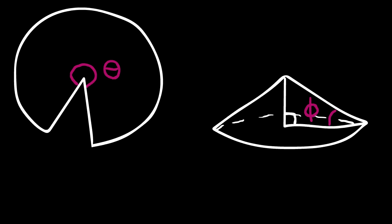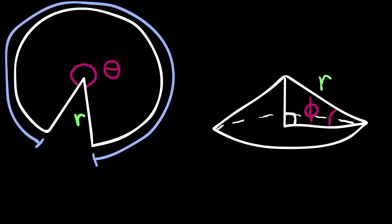What I did was look at a generic sector of a circle and a generic cone and saw that there were a few variables that overlapped. For example, the radius of the circle sector is equal to the slant height of the cone. Then I noticed that the circumference of the circle sector should be equal to the circumference of the cone.